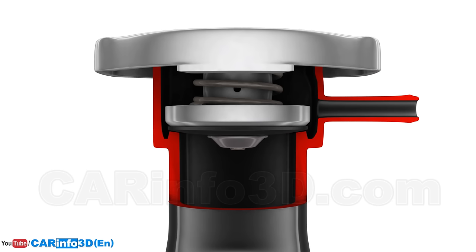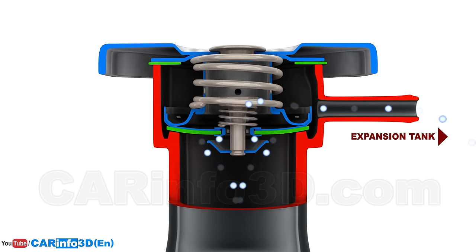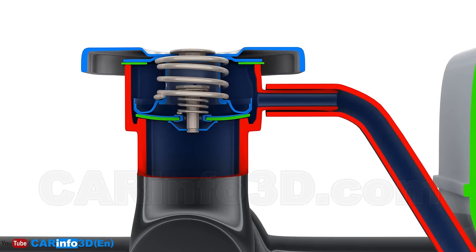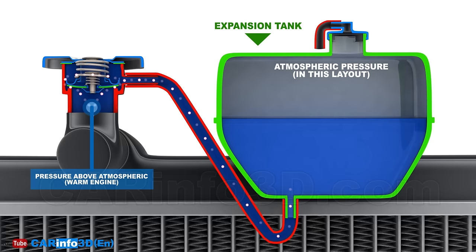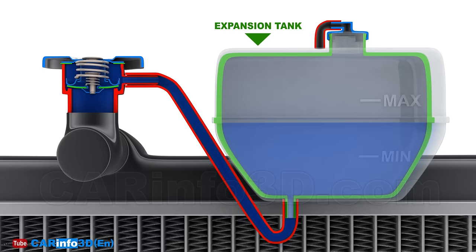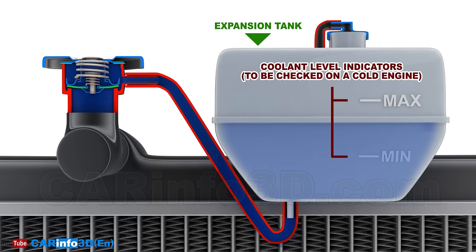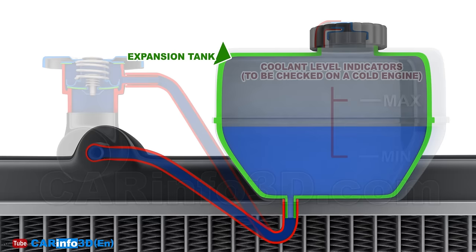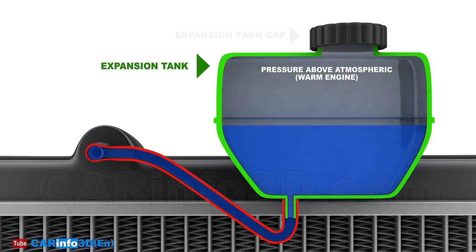When the maximum allowable pressure is exceeded, the cap opens, enabling coolant to escape into the expansion tank. When the pressure decreases, the liquid is pulled back into the system. This design excludes pressure in the expansion tank. The tank stores a coolant supply and has free space for liquid expansion. The expansion tank also features coolant level indicators and can be used to refill coolant as needed. Alternatively, there is another design with no radiator cap, where pressure relief is provided by the expansion tank cap, which manages the pressure level in the system in a similar manner by releasing and sucking air.